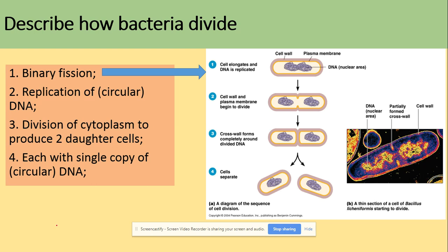Typical questions are asking you how the bacteria will divide. So the process of division is called binary fission, which we were looking at in a video on cell cycle and mitosis. The replication of circular DNA will take place. Division of cytoplasm will produce two daughter cells, and each cell will have a single copy of circular DNA.